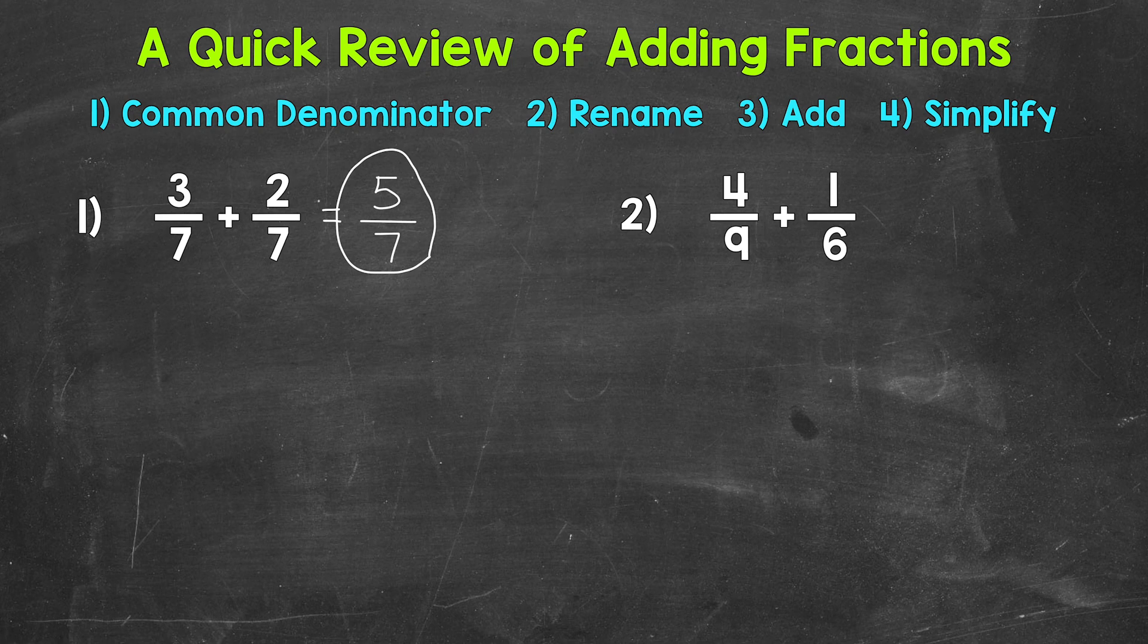Again, for number 1, we had a common denominator of 7. So we were able to add right away. Let's move on to number 2, where we have 4 9ths plus 1 6th.